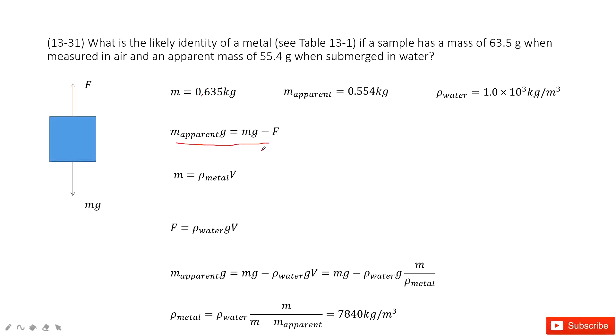And then in this equation, we find this mass is the density of the metal times volume. And this force is just the mass of the water, the mass of water replaced by this object. So the density of water times g times V, agree?